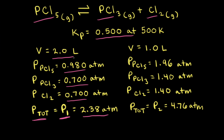If we decrease the volume from two liters down to one liter and keep the temperature constant at 500 Kelvin, we decrease the volume by a factor of two, which means we increase the pressure by a factor of two. All of the partial pressures of our gases double, giving a new total pressure that is twice the original.